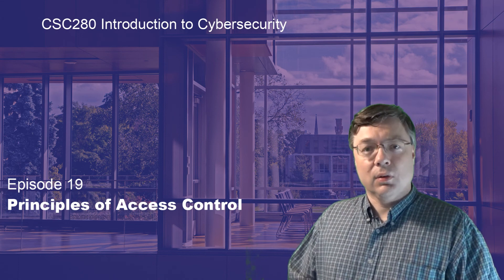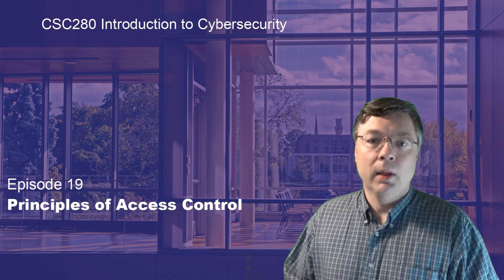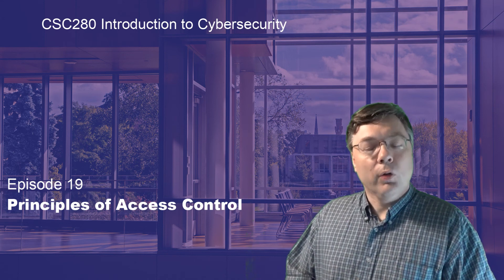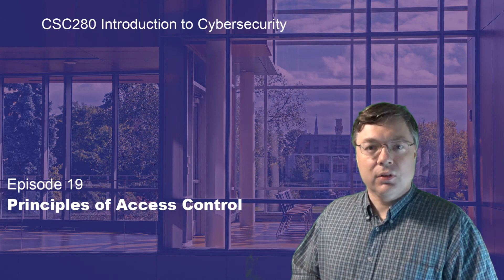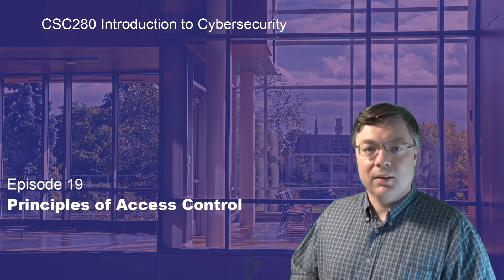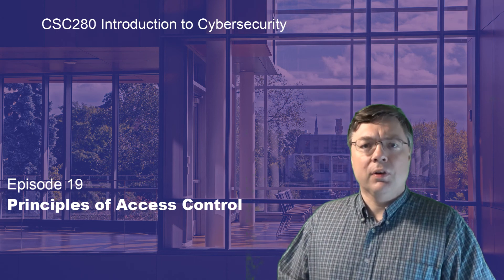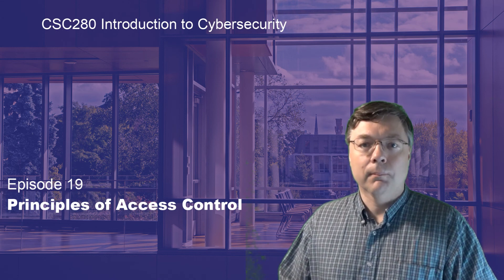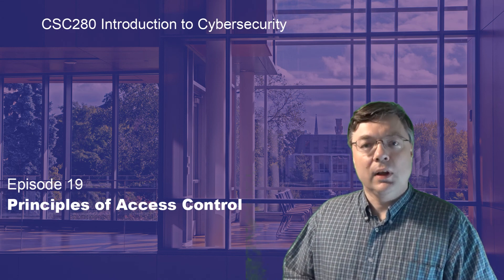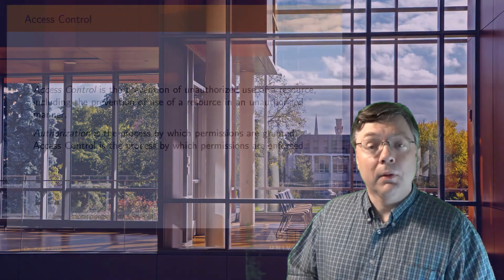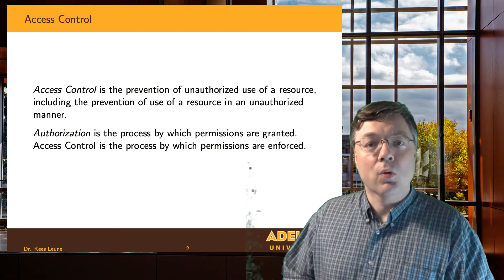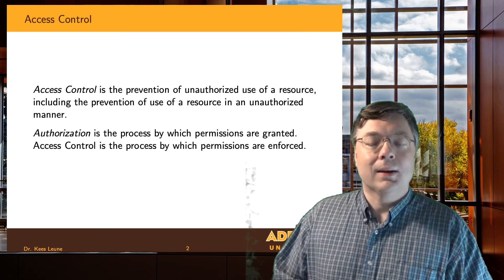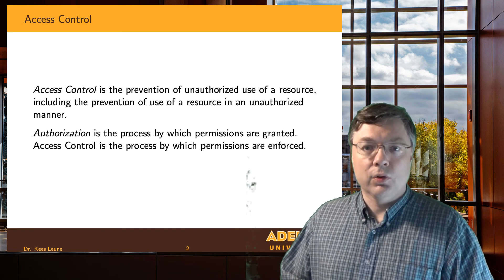Before I can authorize someone, I have to figure out who they are. And that is what authentication was all about. Authentication establishes a belief of identity. We use cryptographic tools to do that — we talked about those in the previous topic. So today we'll talk about access control, and we'll try to figure out that now that we know who someone is, what they should and should not be able to do.